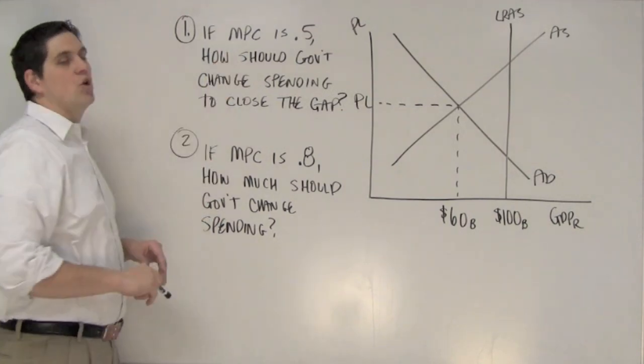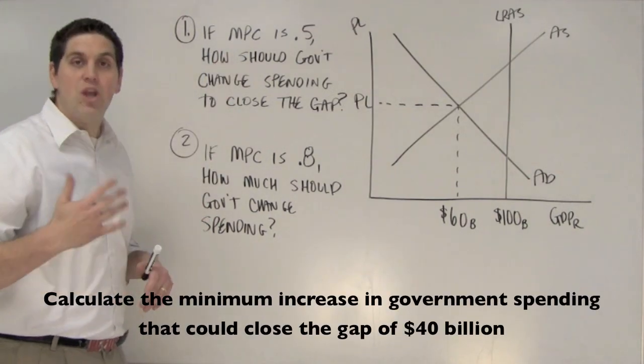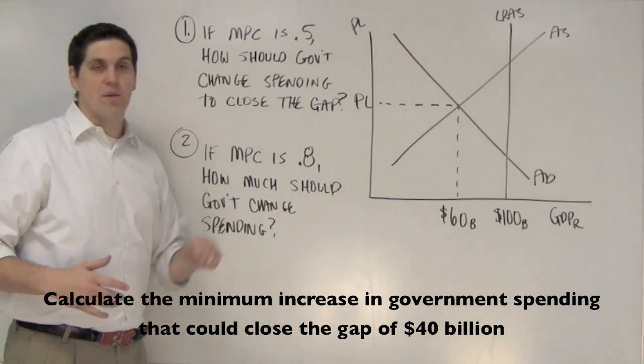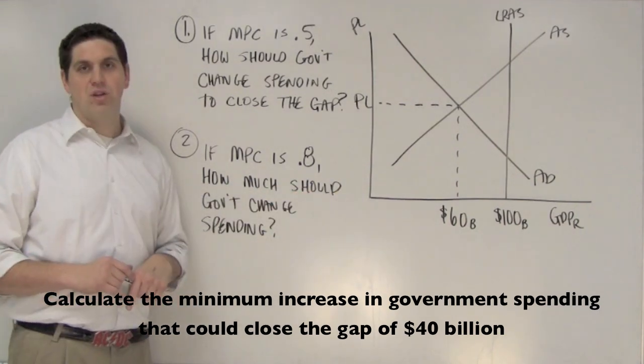If the marginal propensity to consume is 0.5, I want you to tell me how much the government changed spending to close that gap of 40 billion. And then if the marginal propensity to consume is 0.8, how much do they change the government spending.